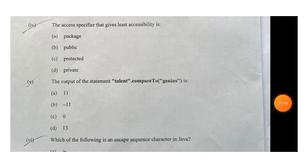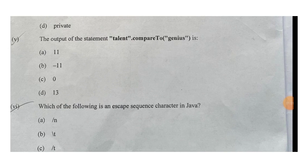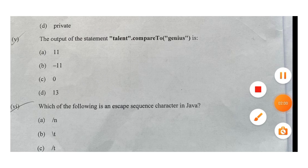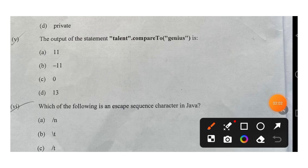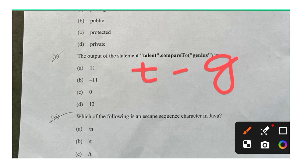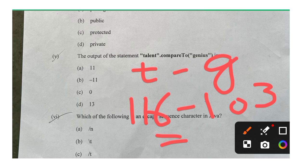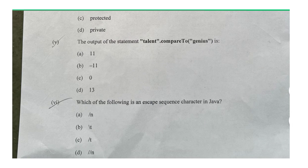Question five: output of 'talent.compareTo(genius)'. The first letter is different — T versus G. The ASCII value of 't' is 116 and the ASCII value of 'g' is 103. When we subtract, we get 13. So the correct option is D.